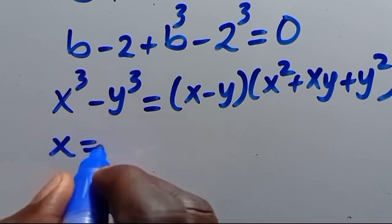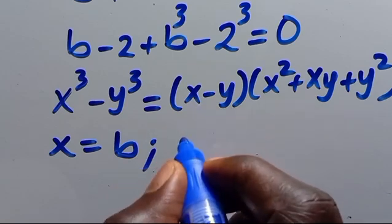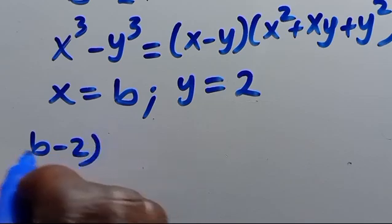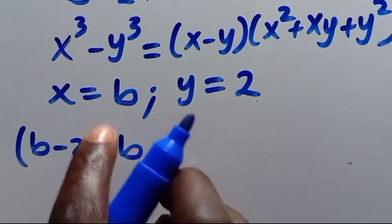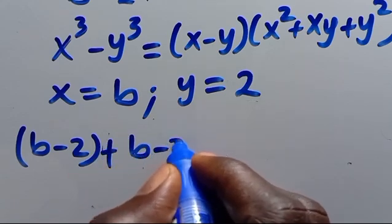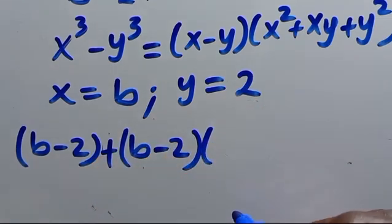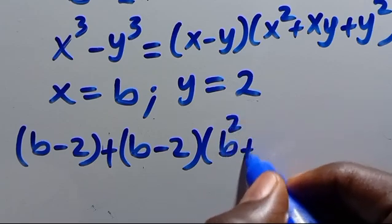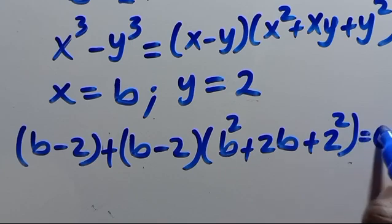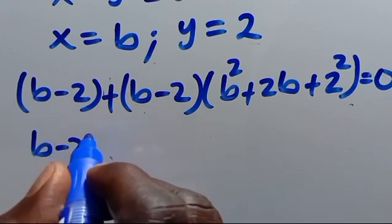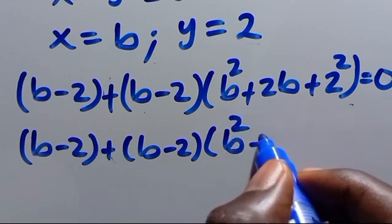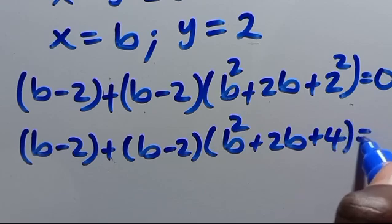We have x from here to be B, then y from here to be 2. So because we have B minus 2 from here, we have B minus 2 plus B minus 2, times B squared plus 2B plus 2 squared, which gives us B minus 2 times B squared plus 2B plus 4 equals zero.